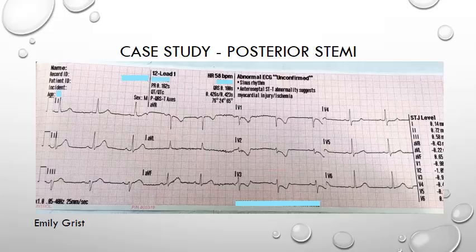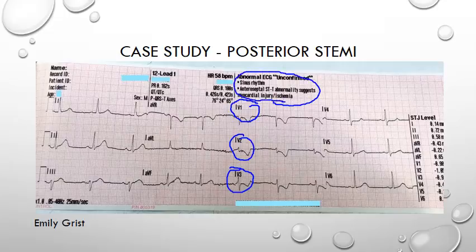In our first ECG submitted by Emily, we can see ST depression in leads V1, V2 and V3, so straight away we're going to be considering a posterior STEMI as the cause. The computer reads this as an abnormal ECG with ST depression suggestive of myocardial injury or ischemia. For us though, we're concerned this could be a posterior infarction, and the treatment would be very different, so let's go ahead and place our electrodes posteriorly and record V7 and V8.